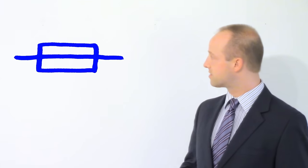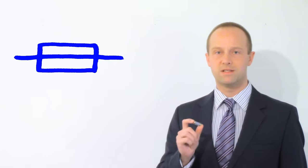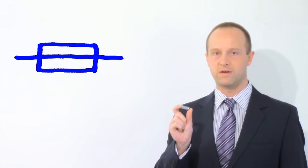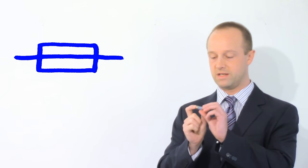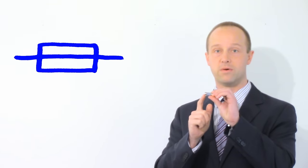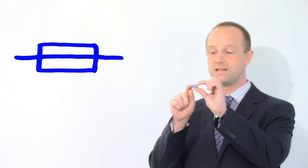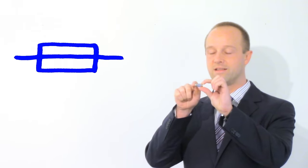This is a fuse and its symbol looks like this. The symbol is actually pretty good because it represents what's going on inside the fuse. The fuse is a little cylindrical component usually, and between this end and this end, there's actually a little wire.